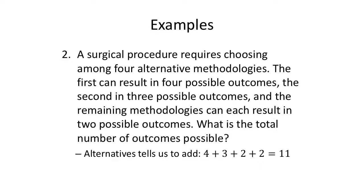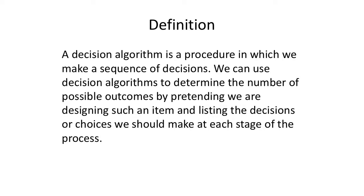All right. So a sequence of steps, we're going to multiply. Alternatives, options, we're going to add. So a decision algorithm is a procedure in which we make a sequence of decisions. We can use decision algorithms to determine the number of possible outcomes by pretending we're designing such an item and listing the decisions or choices we should make at each stage of the process.